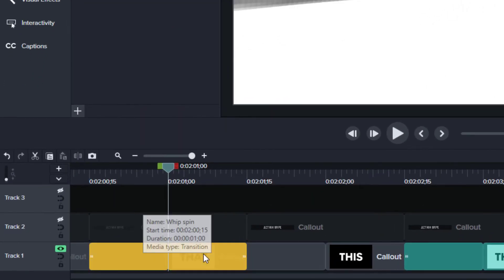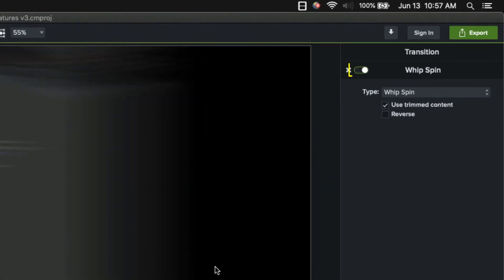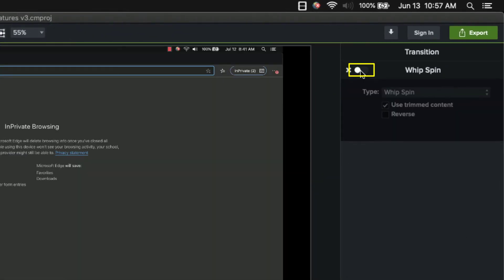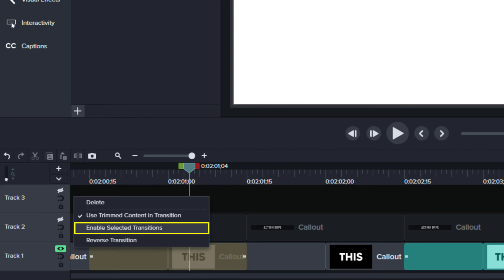You can now right-click a transition and choose disable selected transitions. Or on the Mac, you can click the toggle switch in the Properties panel. After you've made your changes, you can right-click the transition again to enable it.